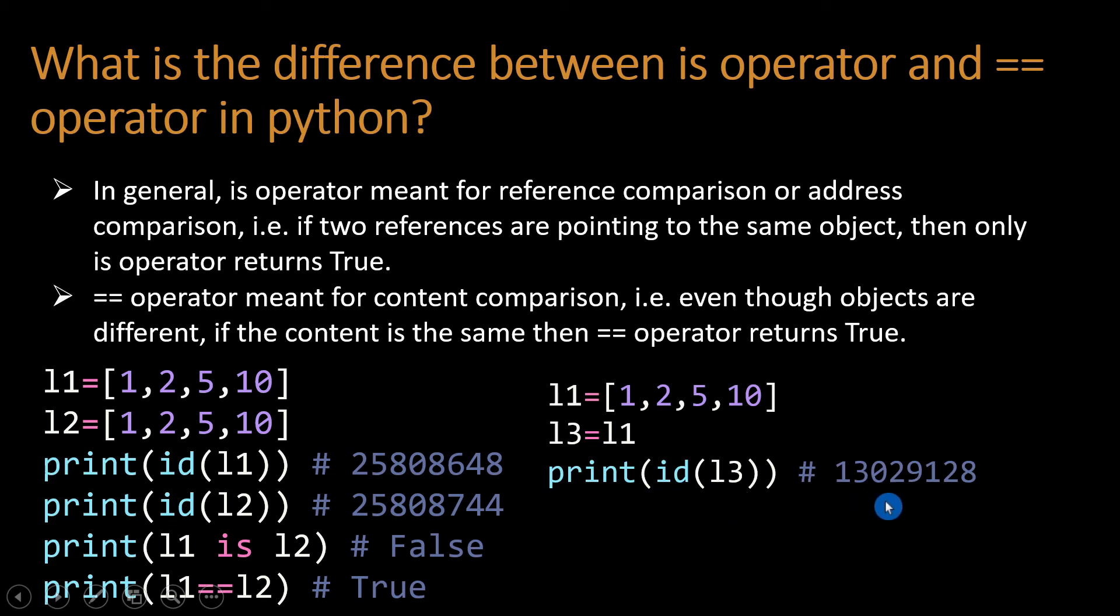And now I print id(l1), we got the same output: 13029128. You see, the two addresses are the same. Now I compare l3 is l1. Since two addresses are the same, we got True.